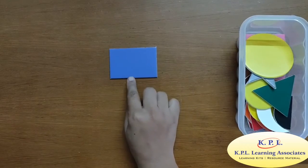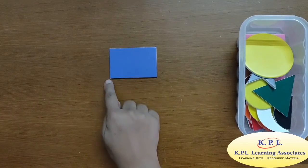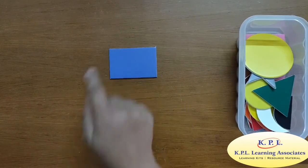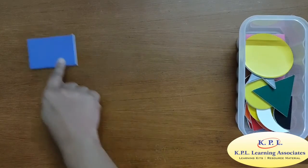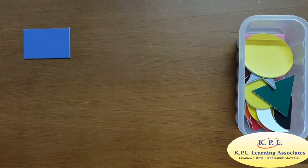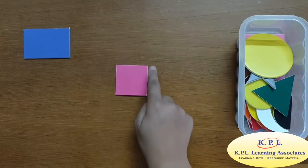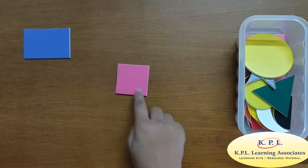Here I have a rectangle having four sides and four corners. This is a square. It also have four sides and four corners.